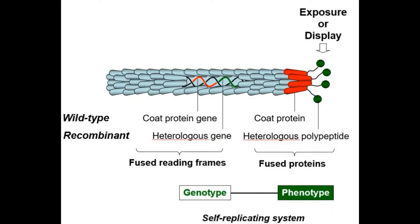We now look at what the phage is composed of. It has a coat protein, a coat protein gene, and a polypeptide which is expressed outside the phage. The coat protein is coded by the coat protein gene, as seen in the figure. We can insert a heterologous gene in place of the coat protein gene; this portion is called a fused reading frame, and the protein expressed outside the phage is called the heterologous polypeptide — a fused protein.